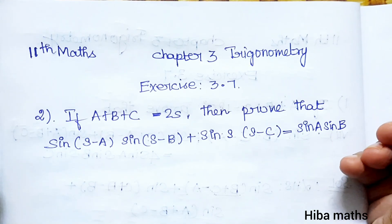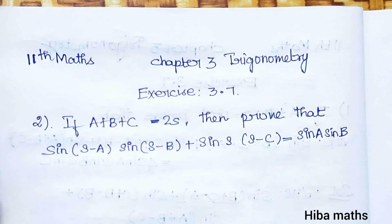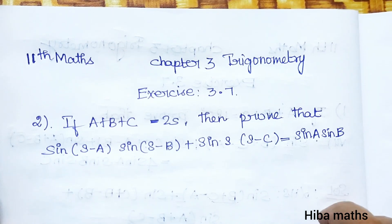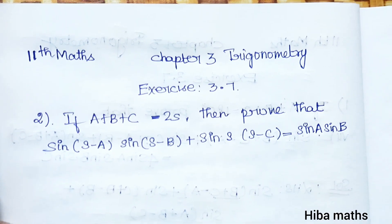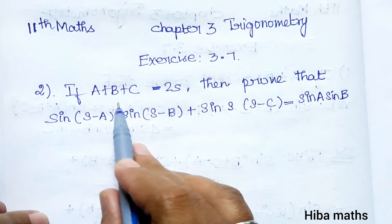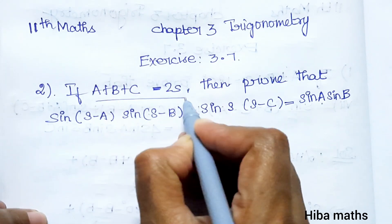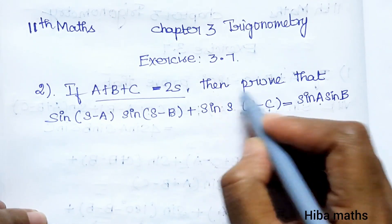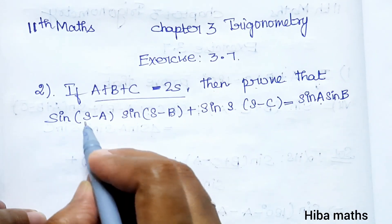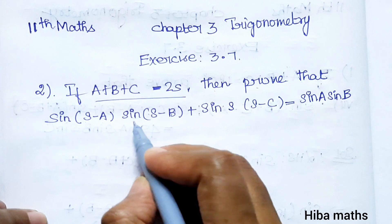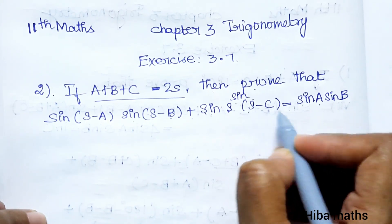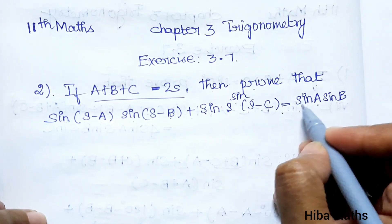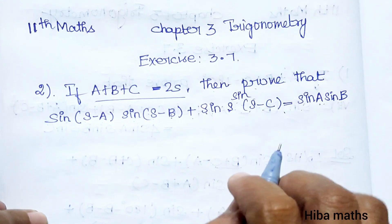Hello students, welcome to Plus Two standard, Chapter 3 Trigonometry, Exercise 3.7, second question. Solve: if a plus b plus c is equal to 2s, then prove that sin(s-a)sin(s-b) plus sin(s)sin(s-c) is equal to sin(a) into sin(b). Let's prove it.